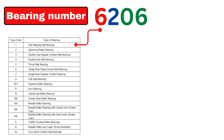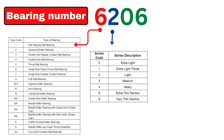The second digit in 6206 shows the robustness and load-carrying capacity of the bearing — indicating which applications the bearing can be used in. Zero shows extra light, one shows extra light thrust, two shows light/medium/heavy application. Eight indicates extra thin section and nine indicates very thin section. For 6206, the second digit 2 indicates light operations.